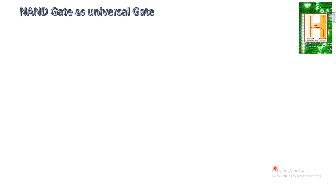Now let us talk about the universal gate. What is meant by a universal gate? We have three basic gates: AND gate, OR gate, and NOT gate. If you are able to implement these three basic gates using a single gate, that particular gate is known as a universal gate. There are two universal gates: NAND and NOR.